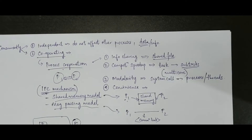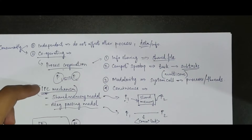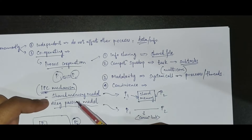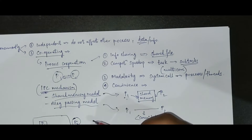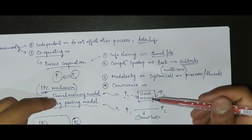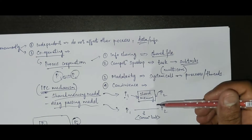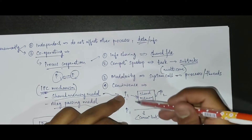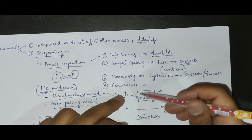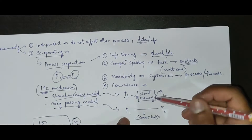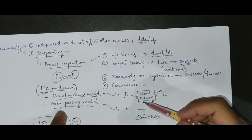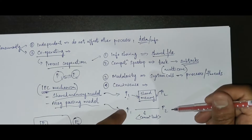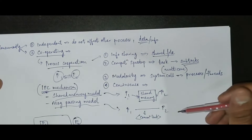In the previous video we talked about inter-process communication. We saw the two models: the shared memory model and the message passing model. In the shared memory model, two processes P1 and P2 communicate through shared memory, and in the message passing model there was a communication link between the two processes trying to communicate with each other.